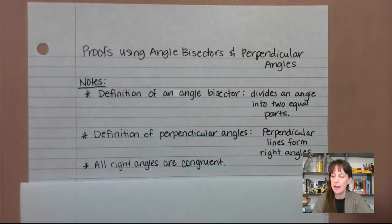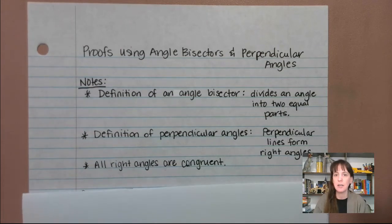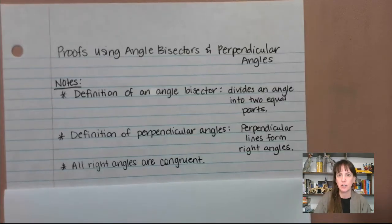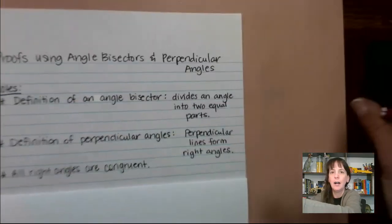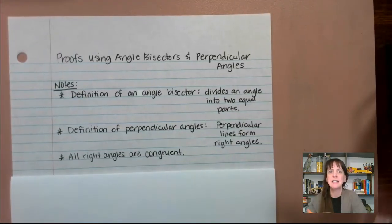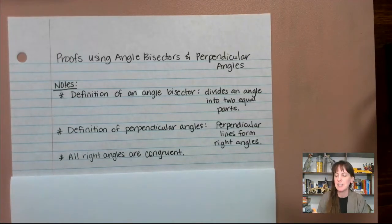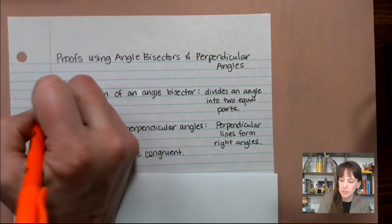Grab your notes, your notepad, and I want you to take a moment to write all these guys down. Let's make sure I get this out of the way. So we want to say the definition of an angle bisector is that it divides an angle into two equal parts. Make sure you have that.